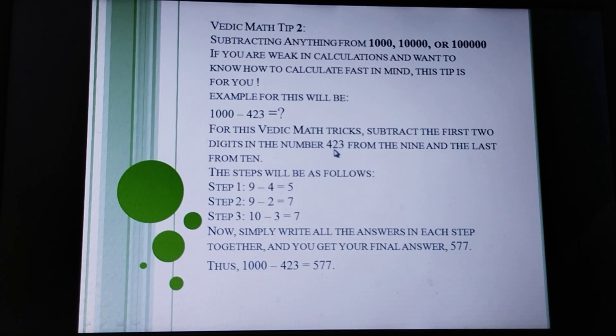Nine minus 4, the first digit of 423, gives us 5. Nine minus 2, the second digit, gives us 7. And 10 minus 3, the last digit, gives us 7.